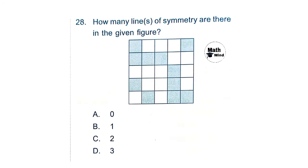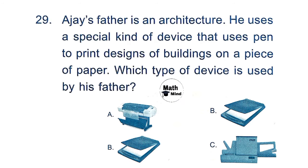Question 28: How many lines of symmetry are there in the given figure? The slanting line divides the figure into two identical halves — symmetry means two mirror halves. This is the only line of symmetry, so option B is correct: 1.